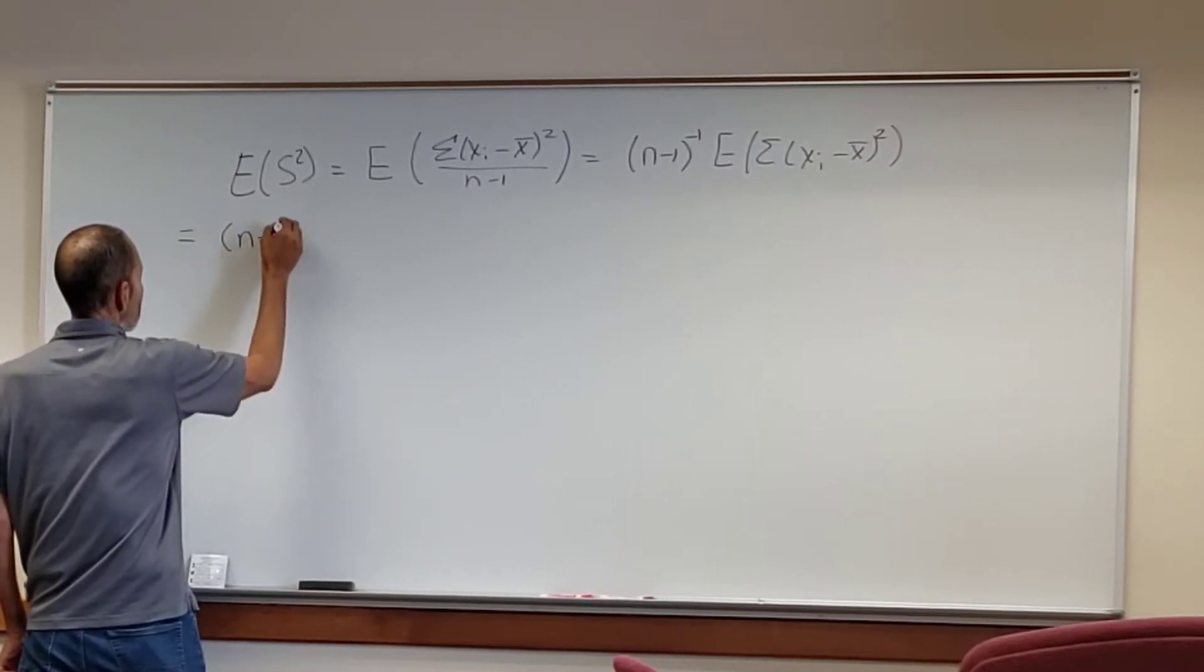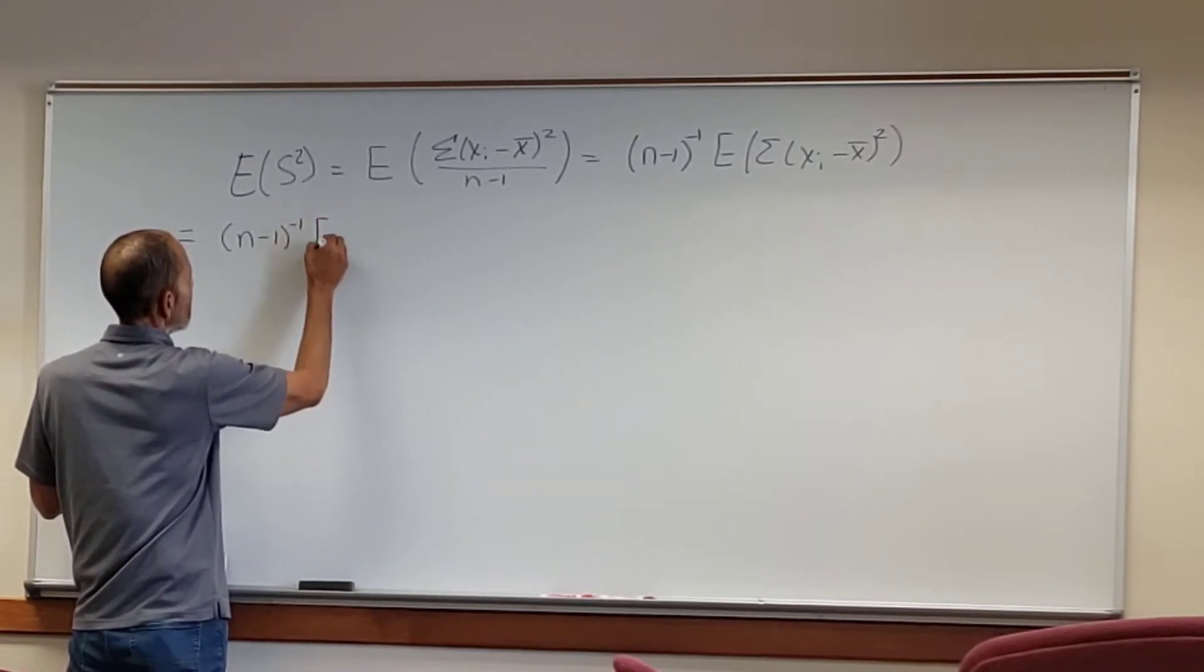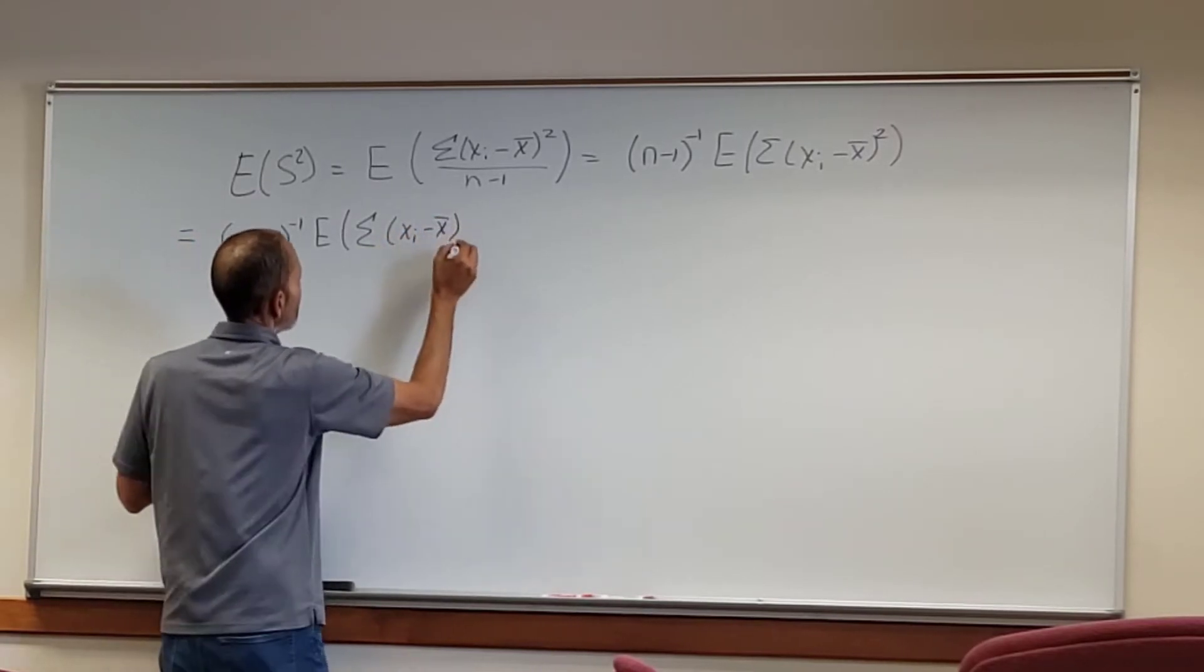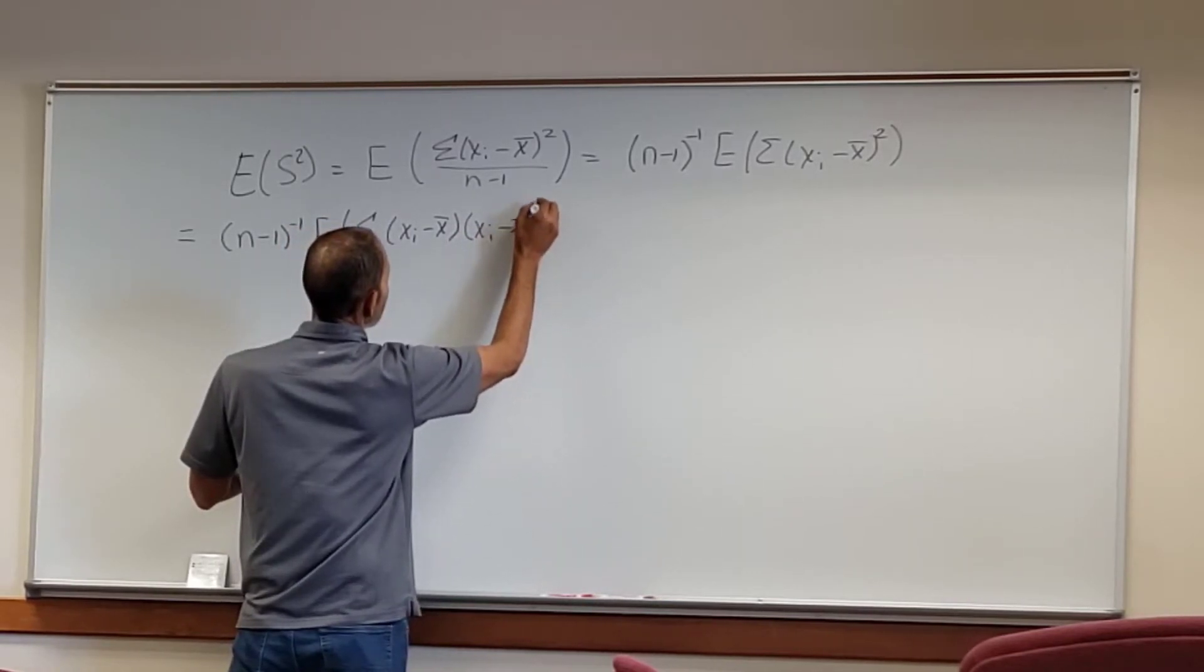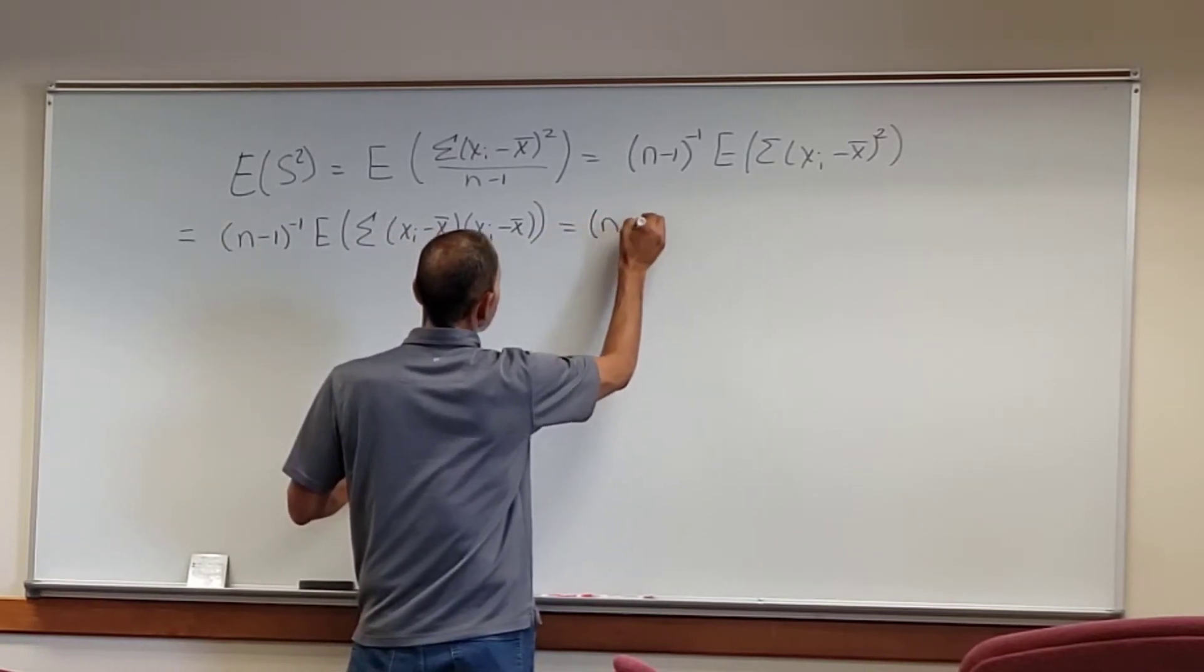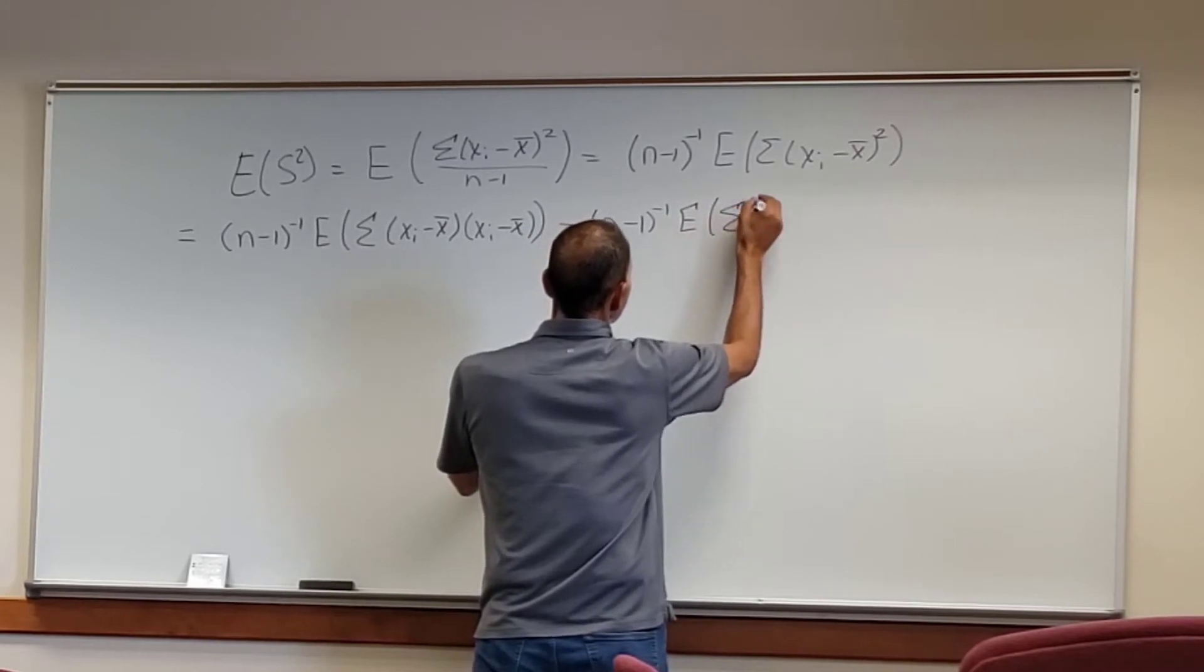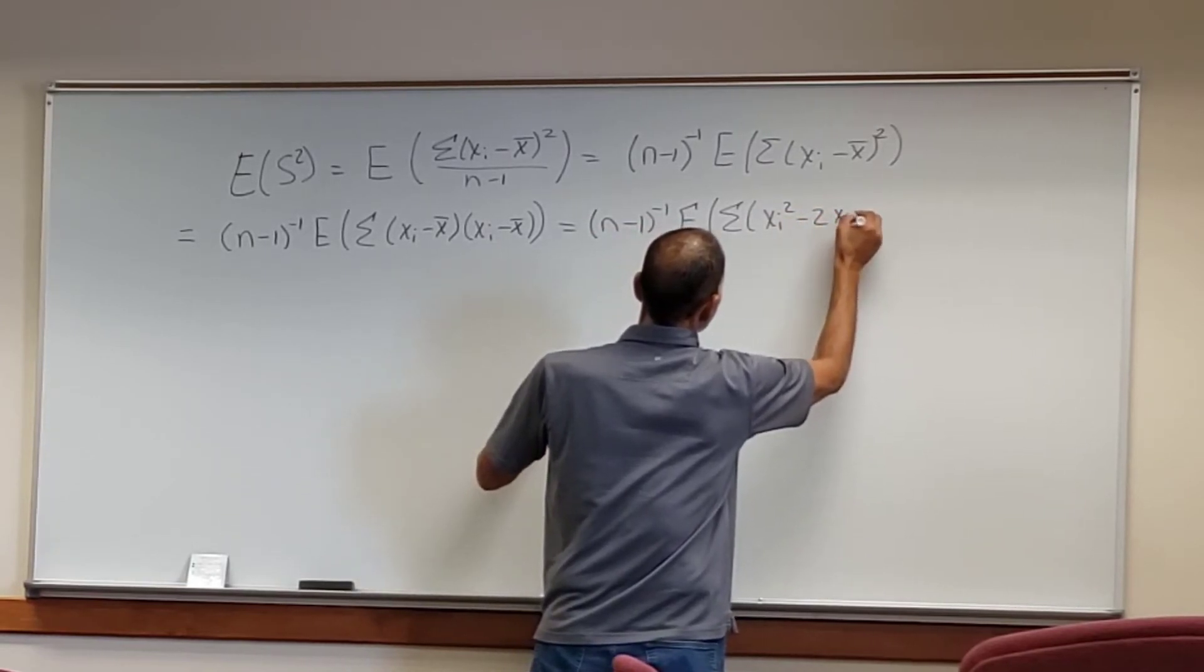And first thing we do you see is that I subtracted, I pulled out the denominator since this is the expected value and that's a constant so it's n minus 1 to the negative 1 power. That's just another way of saying 1 over n minus 1. So I pull that out and then I just expand this square right here, so the x minus mean times x minus mean times n minus 1 to the negative 1 times the expected value of, well here we're going to just go ahead and multiply this out.